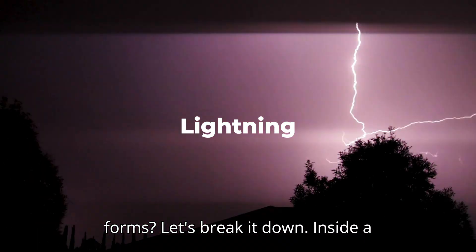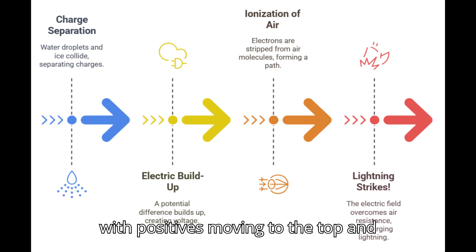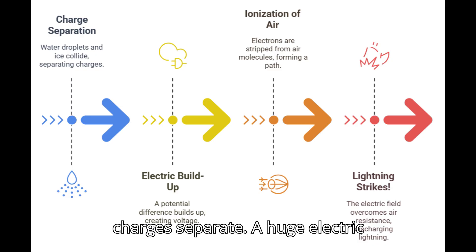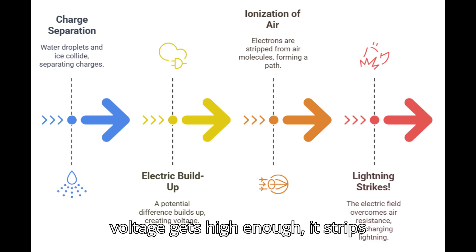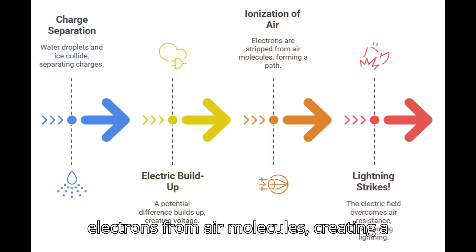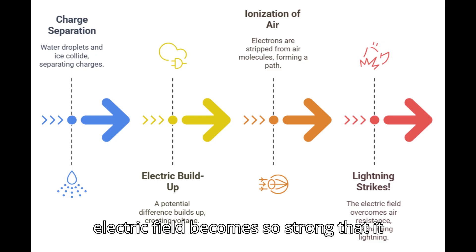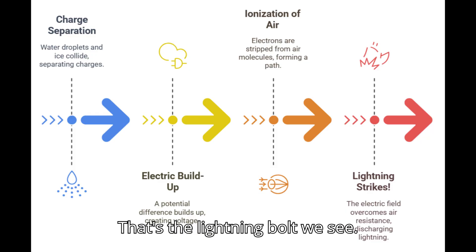Ever wondered how lightning forms? Inside a storm cloud, strong winds push water droplets and ice around. As they collide, positive and negative charges separate — positives move to the top and negatives settle at the bottom. As more charges separate, a huge electric potential difference builds up, reaching millions of volts ready to discharge. When the voltage gets high enough, it strips electrons from air molecules, creating a conductive path. The electric field becomes so strong that it breaks through the air's resistance, unleashing a massive energy discharge — that's the lightning bolt we see.